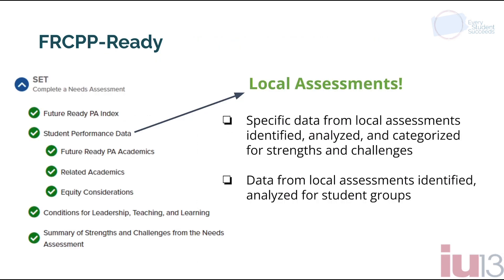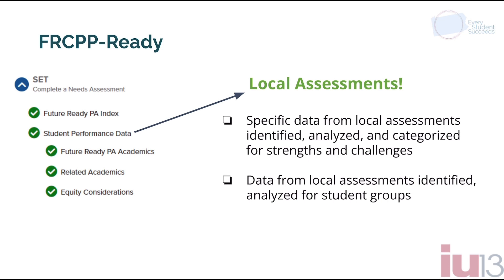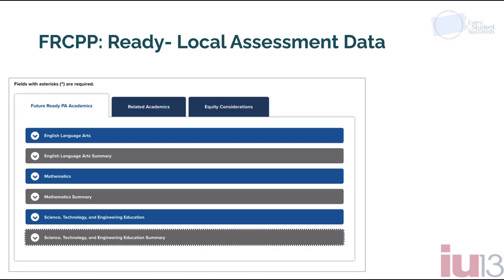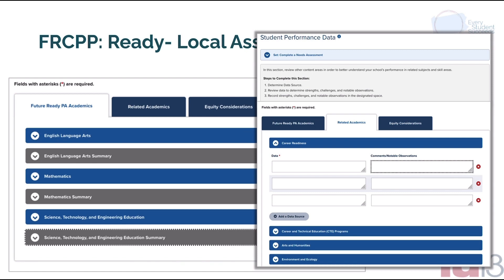The next section for student data is the student performance data — this is local assessment data. When reviewing this section, check to ensure that all available local data points are listed and that the name of the assessment is included. Did the team disaggregate the local assessment data by student group? What do you notice when you review that data? What is your level of agreement with the identified strengths and challenges? Notice how the teams enter local assessment data related to the Future Ready PA Index, data for other related academics, and then data organized and analyzed by student groups.